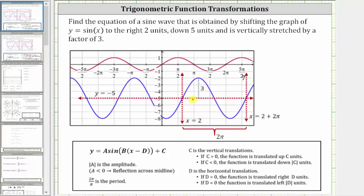Let's find the equation of the blue sine function in the form y equals a sine of b times the quantity x minus d plus c, where the absolute value of a is the amplitude, two pi divided by b is the period.